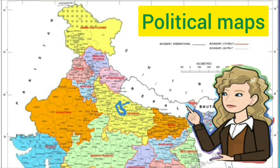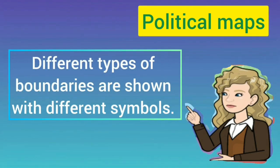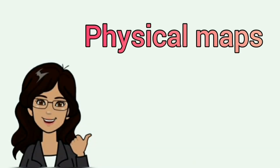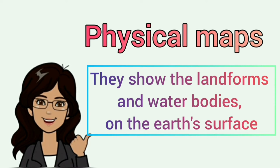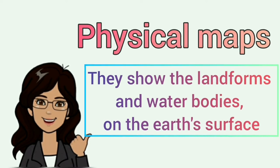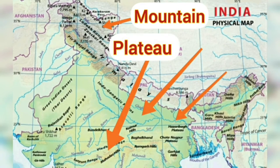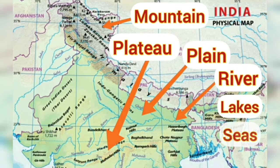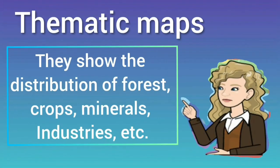Political maps show the boundaries of administrative units such as countries, states, and districts. Different types of boundaries are shown with different symbols. They also show the location of cities, towns, and villages. Physical maps show the landforms and water bodies on the earth's surface — areas such as mountains, plateaus, plains, rivers, lakes, and seas. The different features are shown in different colors.